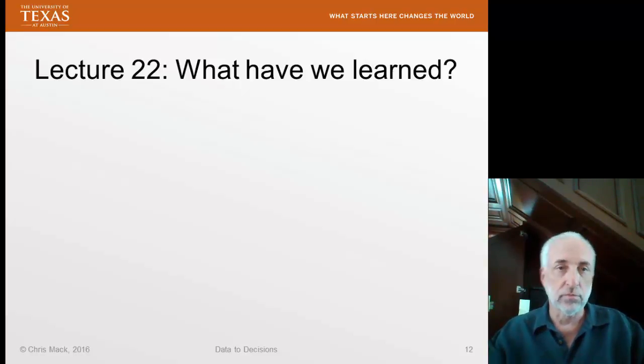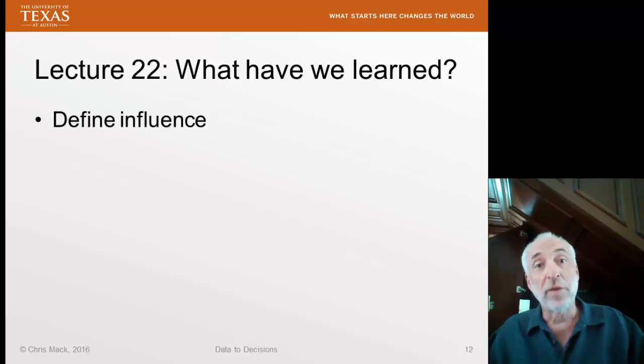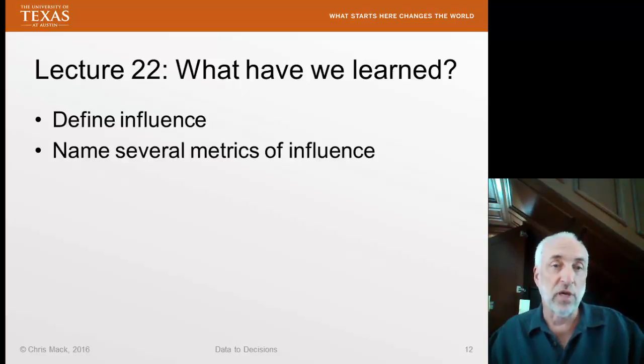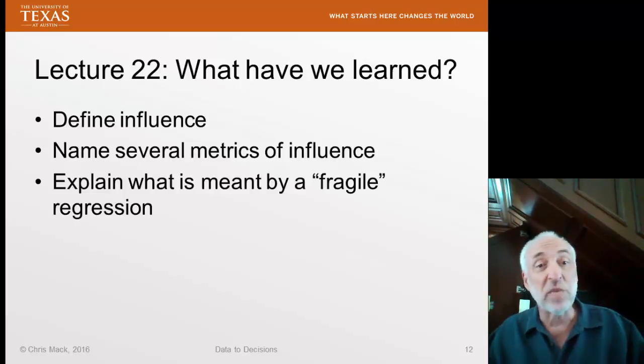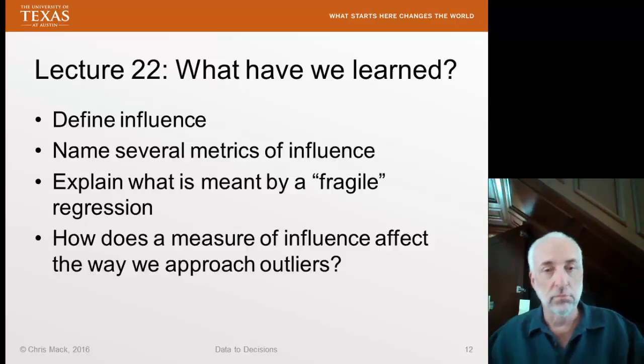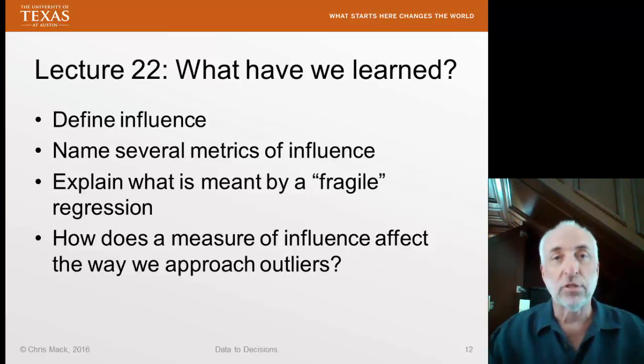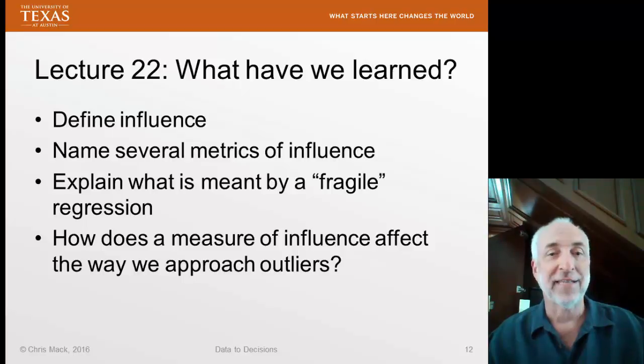Lecture 22. What have we learned? You should be able to quickly and easily define influence, name several metrics of influence, explain what is meant by a fragile regression, and finally, how does a measure of influence affect the way we approach outliers? Well, that's my lecture so far. Until next time.